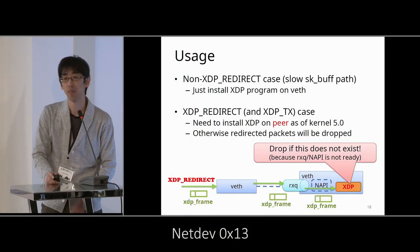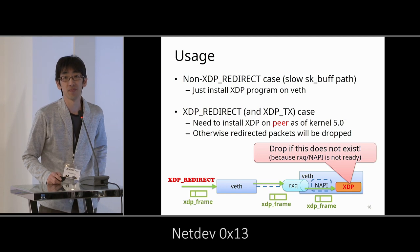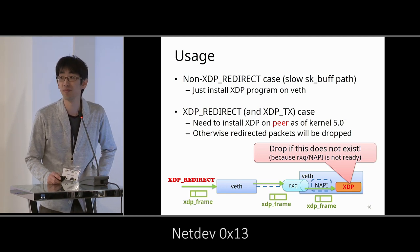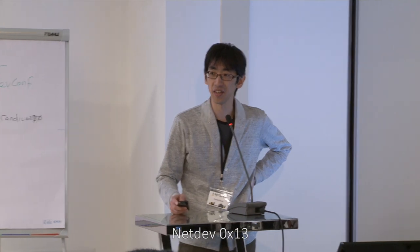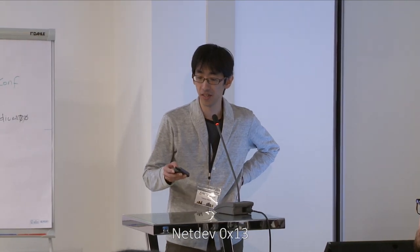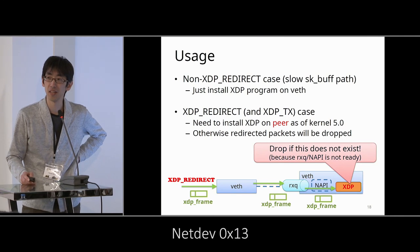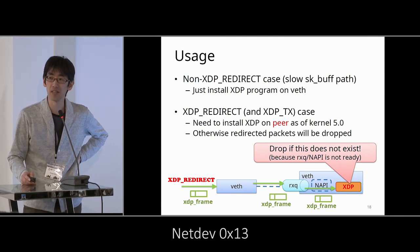A follow-up discussion noted that for XDP redirect, bulking of 16 packets has been implemented. The problem is XDP-TX cannot use that infrastructure the same way, but batching could be done by another trick for the TX case.